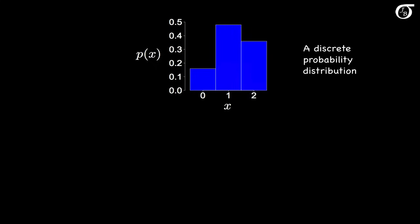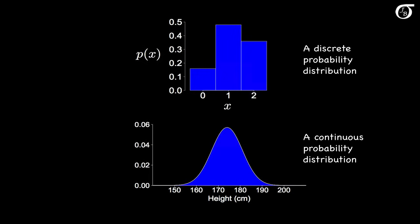I'm going to compare this discrete probability distribution for our discrete random variable x with a probability distribution for a continuous random variable. This is approximately the probability distribution of the height of a randomly selected adult Canadian male, which is a continuous random variable, and we model continuous random variables with a smooth curve. For discrete random variables there are jumps between the different values — in the example, 0 to 1 to 2. For continuous random variables there is a continuum of possible values, modeled with a smooth curve. One important difference: for continuous random variables the y-axis does not represent probabilities but rather something called a probability density.